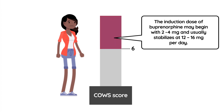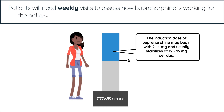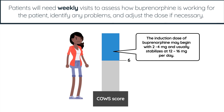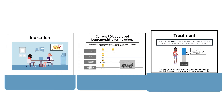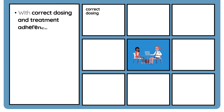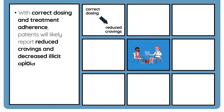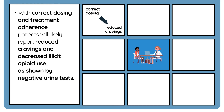During the next phase, which focuses on the maintenance of abstinence from opioids and long-term withdrawal management, patients will need weekly visits to assess how buprenorphine is working, identify any problems, and adjust the dose if necessary. With correct dosing and treatment adherence, patients will likely report reduced cravings and decreased illicit opioid use, as shown by negative urine tests.